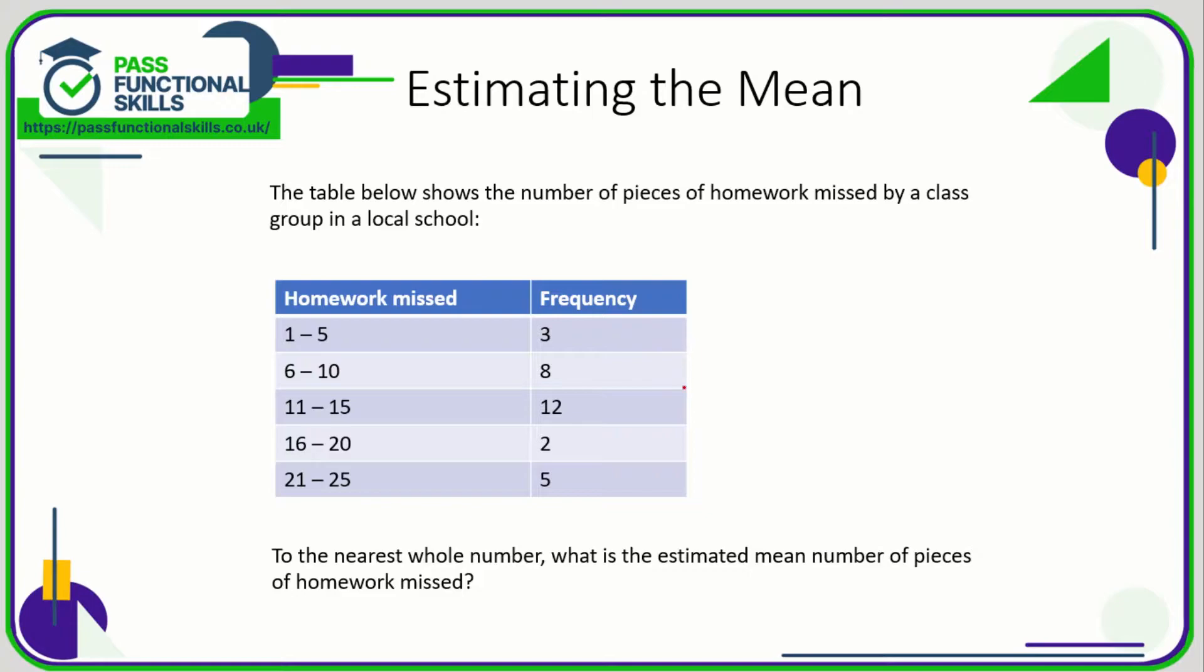Now, with a group frequency table, we can estimate the mean. So this table shows the number of bits of homework missed by a class. Three people missed between one and five bits of homework. Eight people missed between six and ten, et cetera. By adding up the frequency, we can work out how many people were in this class. Three plus eight plus 12 plus two plus five is 30. So there were 30 students.